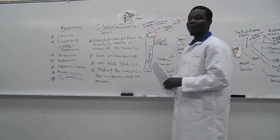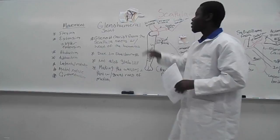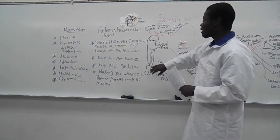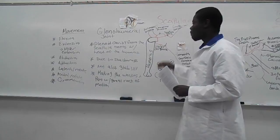All right, class, we have come towards the end. I know you guys are excited to learn about our last articulation joint of the scapula. It is called the glenohumeral joint. The glenohumeral joint is when the head of the humerus connects to the glenoid cavity of the scapula.